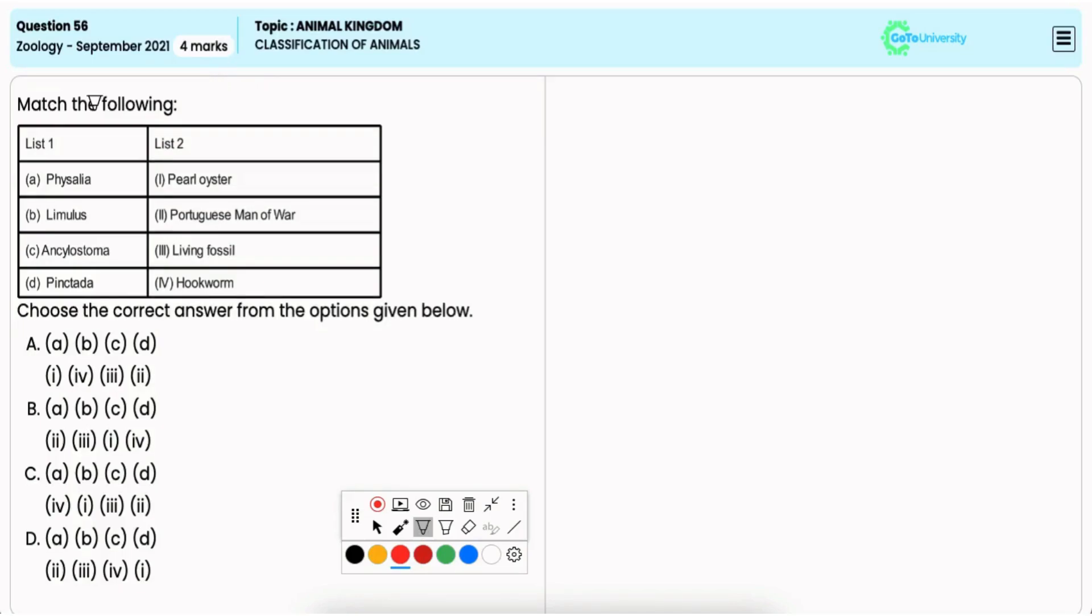In this question, you have to match the components given in list 1 with that of list 2.